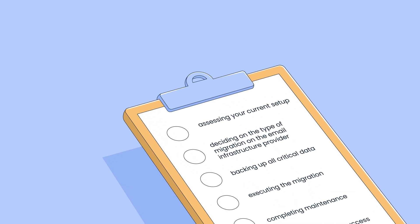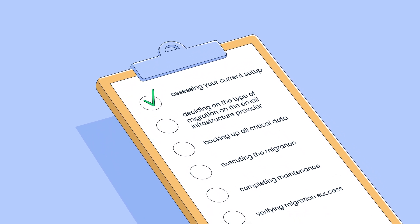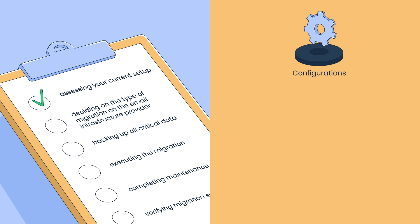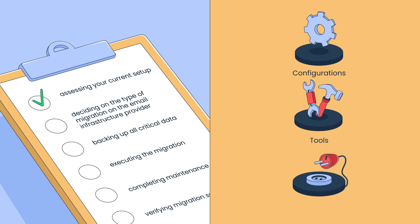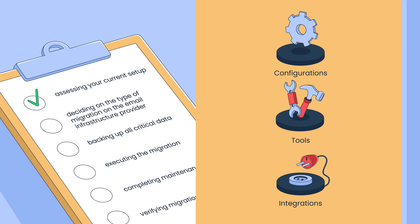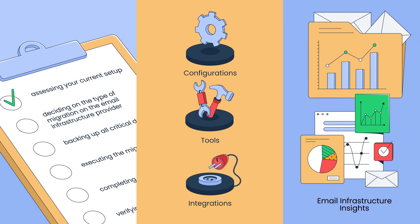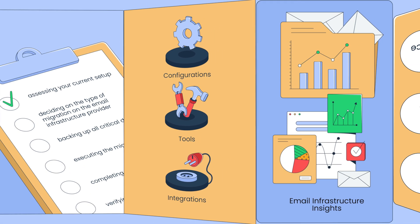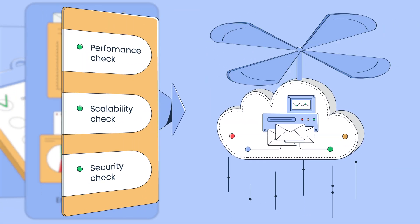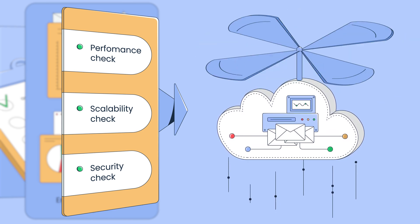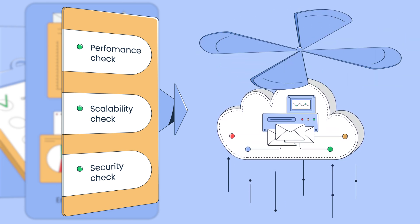The first step in any email infrastructure migration should be assessing the email setup. During this step, you'll evaluate the components of your existing email setup, such as configurations, tools, and integrations that are critical to your operations. You'll also take a close look at where your current infrastructure stands in terms of performance, scalability, and security. Once this step is done, it should give you a solid foundation for creating your migration strategy.